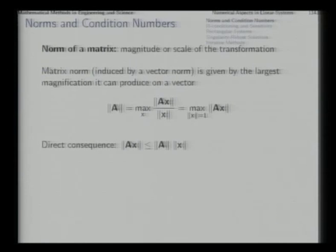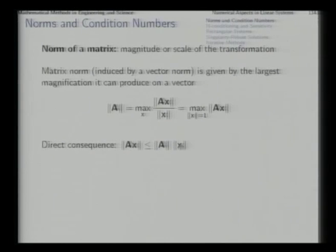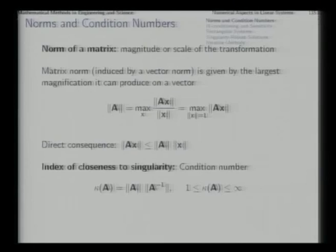As a direct consequence of this definition, we will find that the norm of Ax will always be less than or equal to the product of the norm of the matrix and the norm of the vector x. Because the largest possible magnification has been defined as the norm of the matrix, so whatever magnification occurs will be at most equal to it — most of the time it will be less. That is why, as a direct consequence of this definition, we have this inequality.